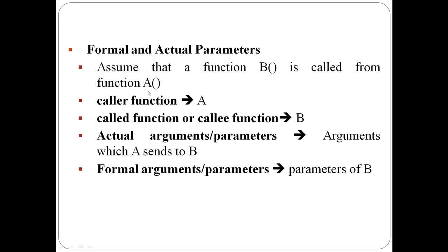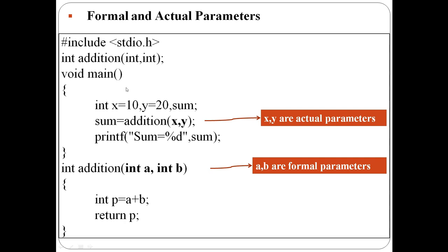There are two functions a and b. If b is called from a, then a is called the caller function and b is called the callee function. Now we are going to see what are actual arguments or parameters and formal arguments or parameters. In this example, addition is the user-defined function: sum equal to addition(x, y) — this is the function call instruction.